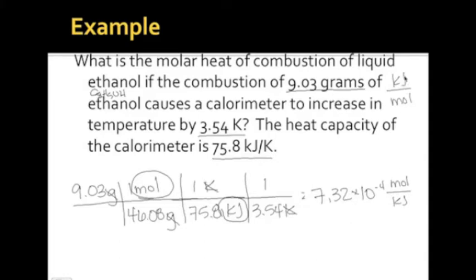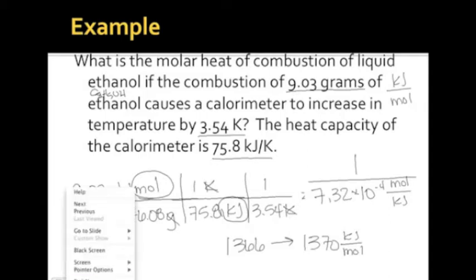But my answer needs to be in kilojoules per mole. So all you have to do is invert this. So take this whole thing and put it over 1. And so you take 1 divided by that, and you end up with 1,366, or since we're only allowed 3 sig figs, 1,370 kilojoules per mole. And whenever you feel like it, you can pause this. You can rewind it if you need to hear me explain something again. Or if as you're watching this, you realize you have questions that I did not answer on here, then write them down and ask them in class tomorrow.